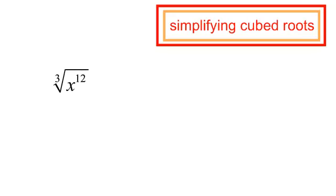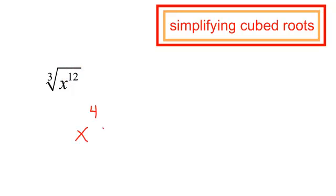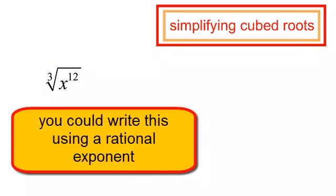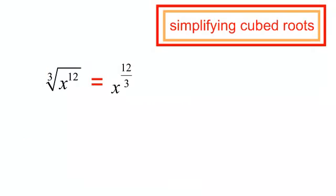With that in mind, let's look at this problem: the cube root of x to the 12th. I'm thinking cubic, not squares. Well, 12 is a multiple of 3, so x to the 4th times x to the 4th times x to the 4th is x to the 12th. Using rational exponent notation, that equals x to the 12 thirds, which equals x to the 4th. x to the 12th is a perfect cube root — it comes out from underneath the radical as x to the 4th.